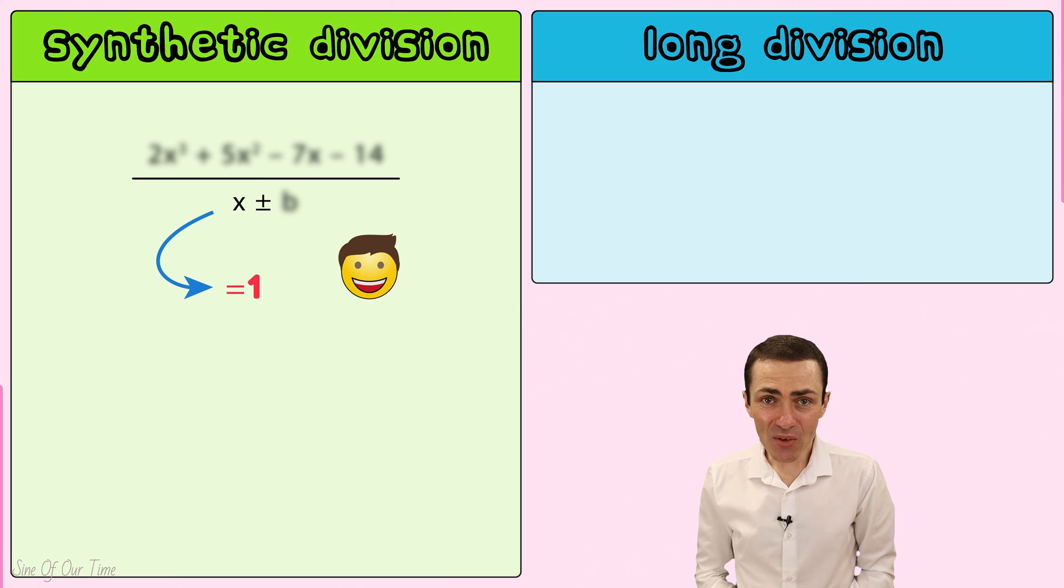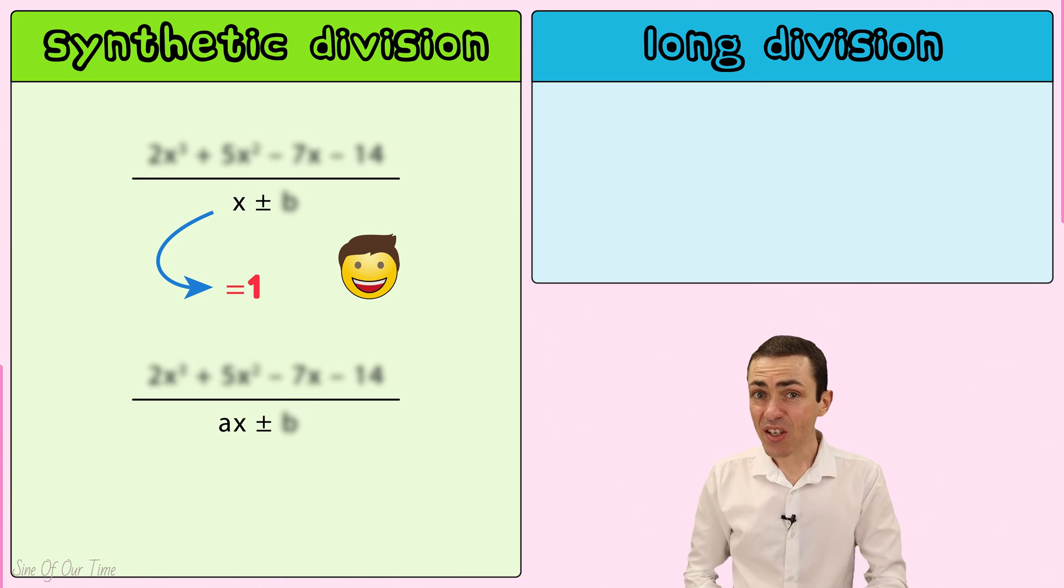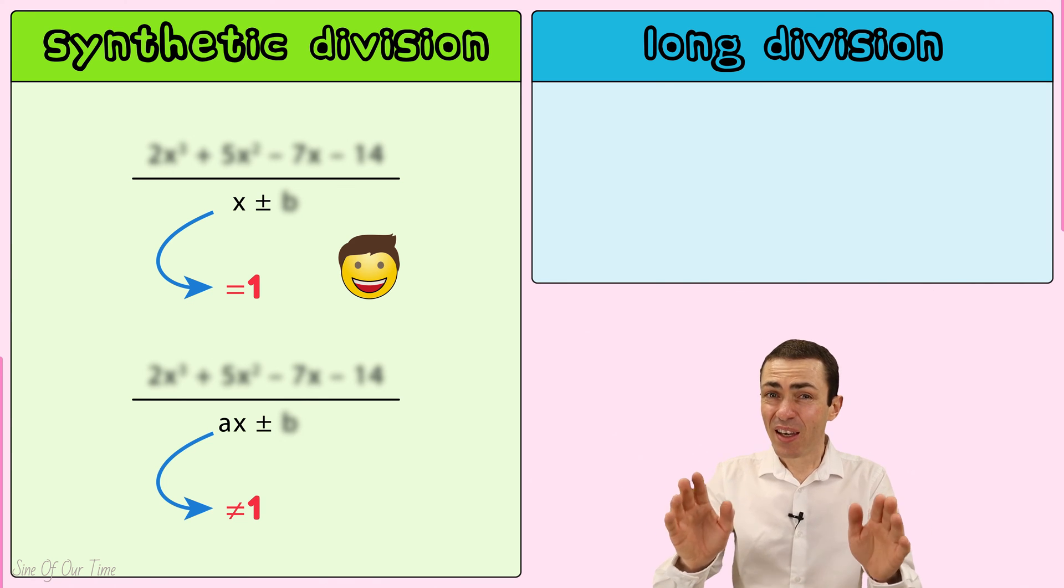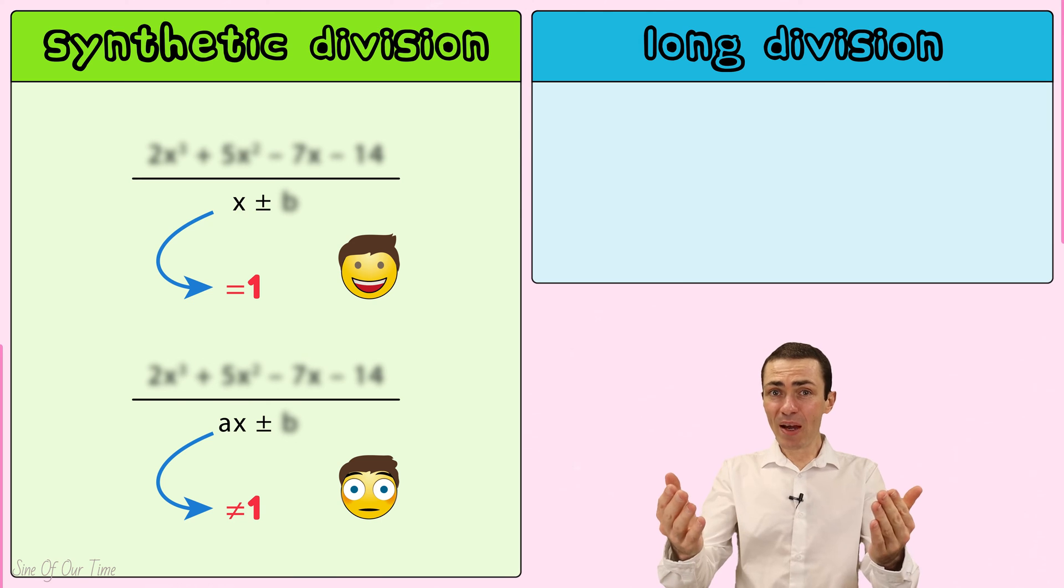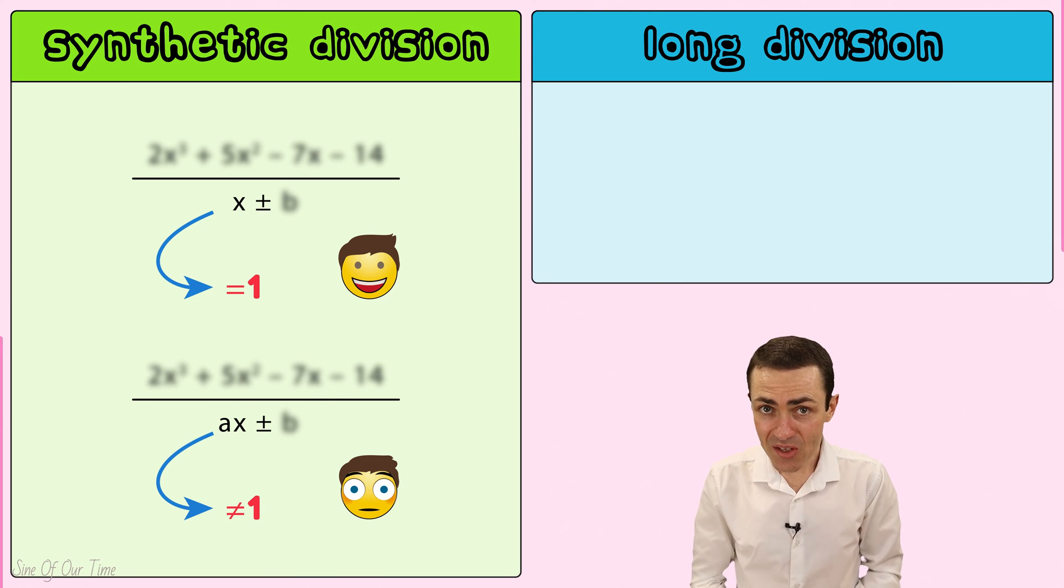However, when we divide by a polynomial of the form ax minus b, where the coefficient of x is not equal to 1, then things get a little tricky. But more about that in a later video in this series.